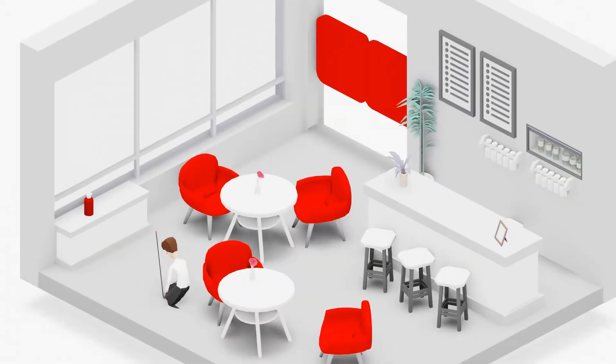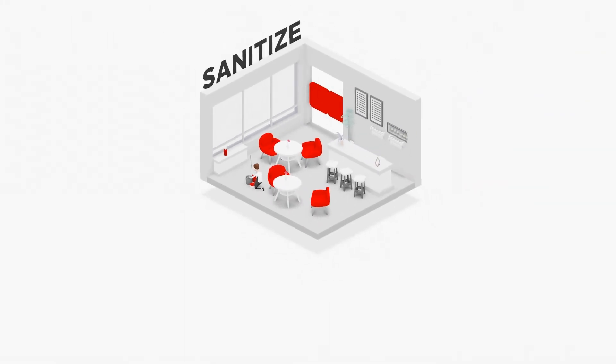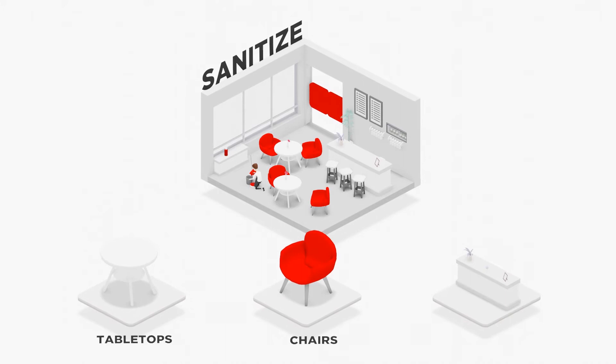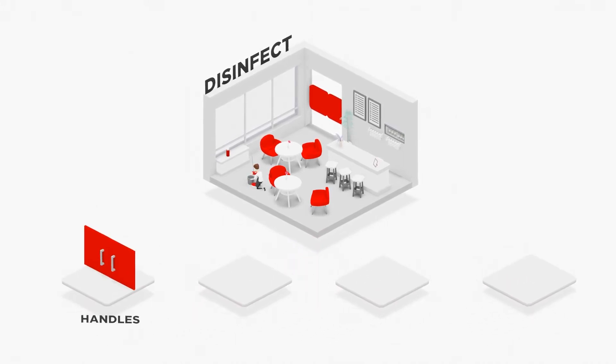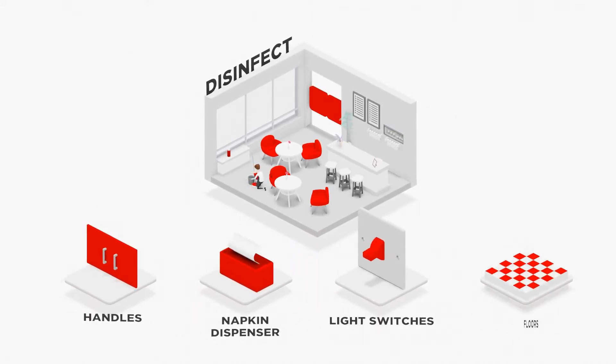When you're thinking about the dining room, use sanitizer for tabletops, chairs, and booths, while disinfectants should be used for things like handles, napkin dispensers, light switches, and floors.